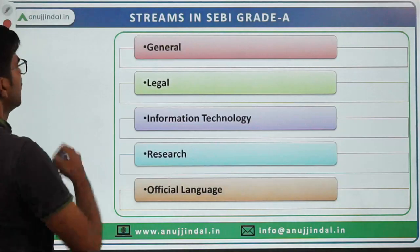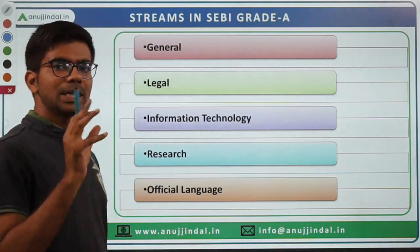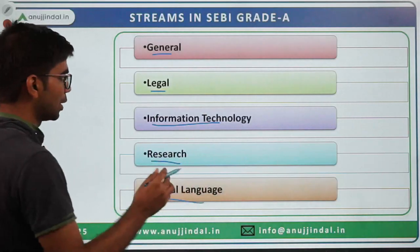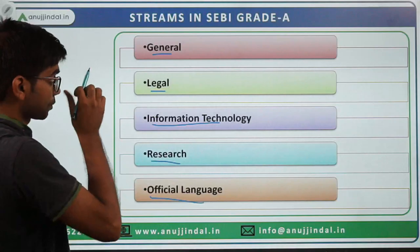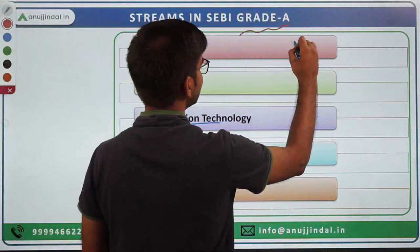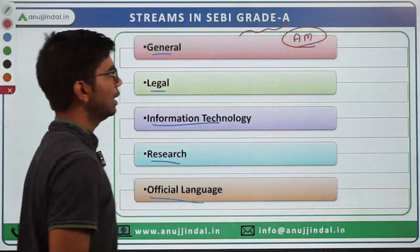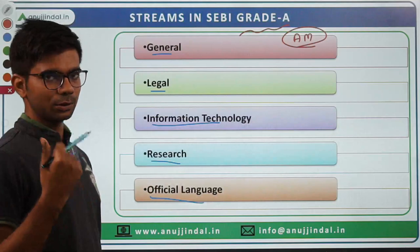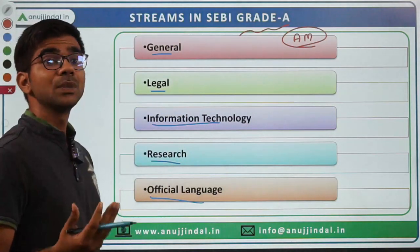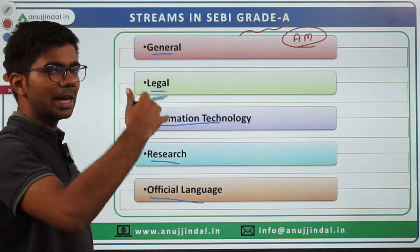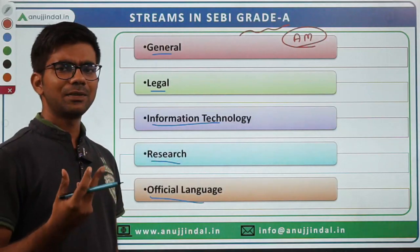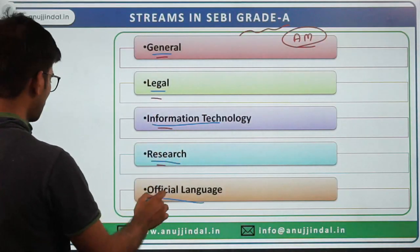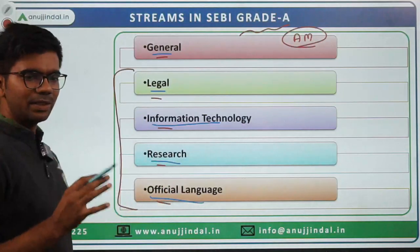SEBI hires for five streams through its Grade A exam: General, Legal, Information Technology, Research, and Official Language. SEBI Grade A means this is an Assistant Manager post. From Grade A you move up the hierarchy to Grade B (Manager), then C, D, E, F, and so on. Promotions are generally not very slow — it takes about three to five years to get promoted.